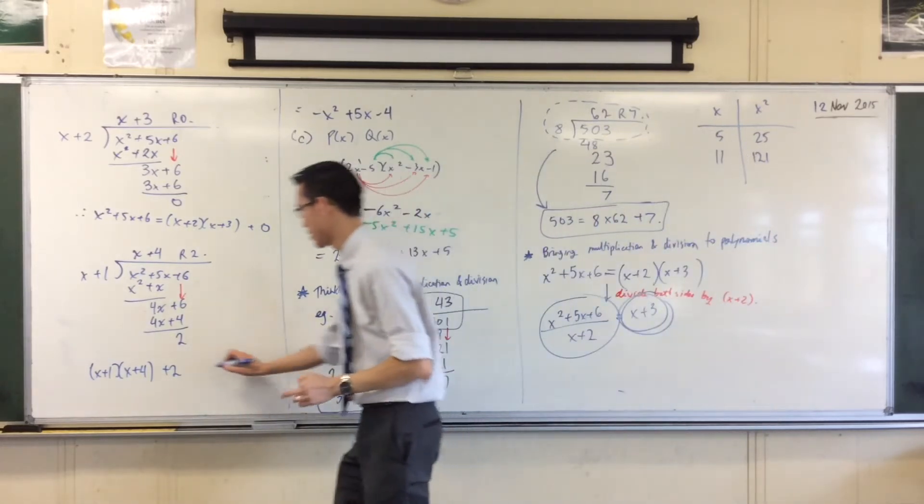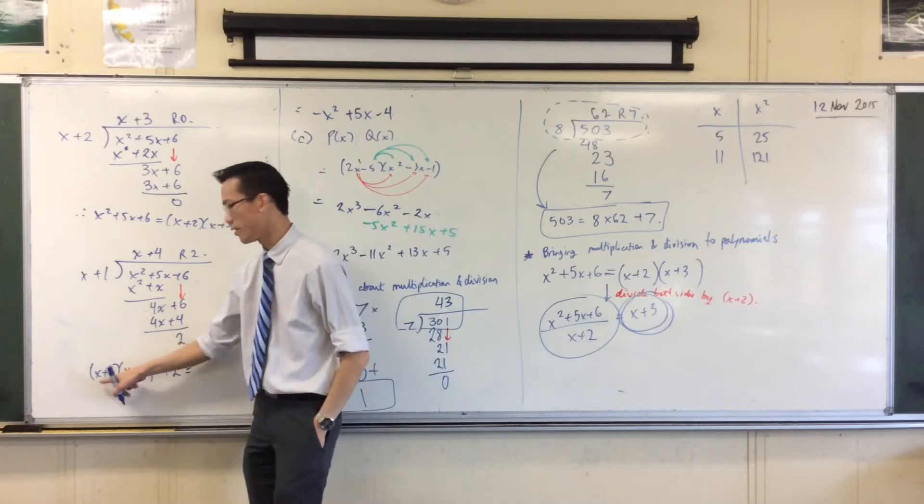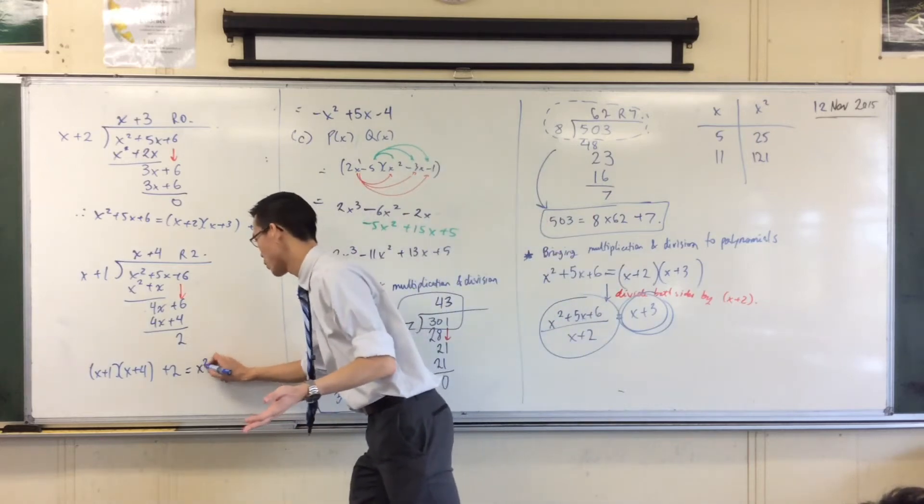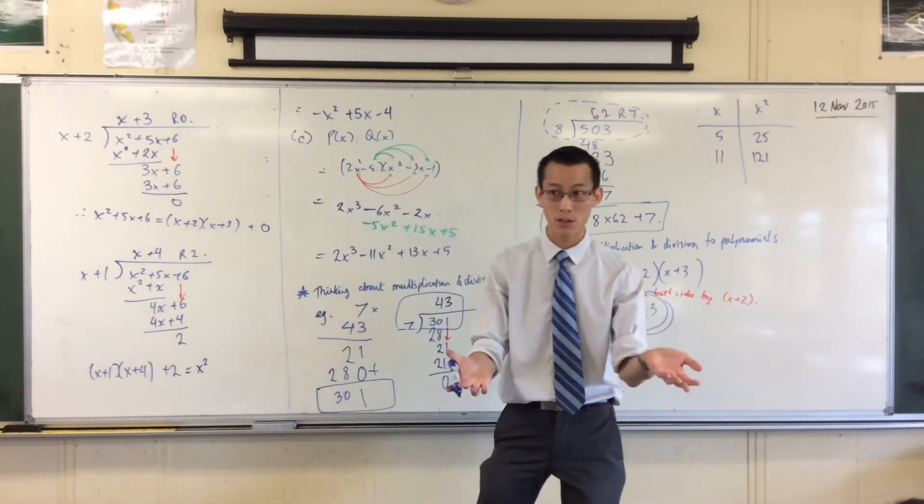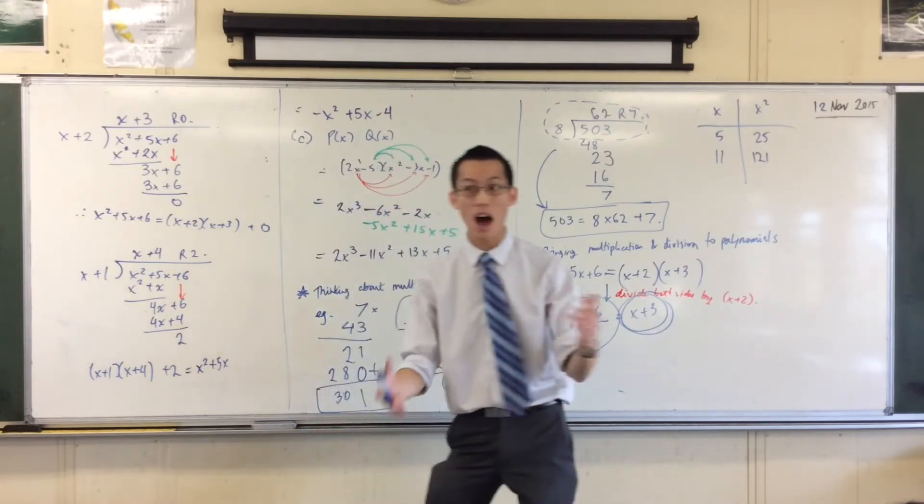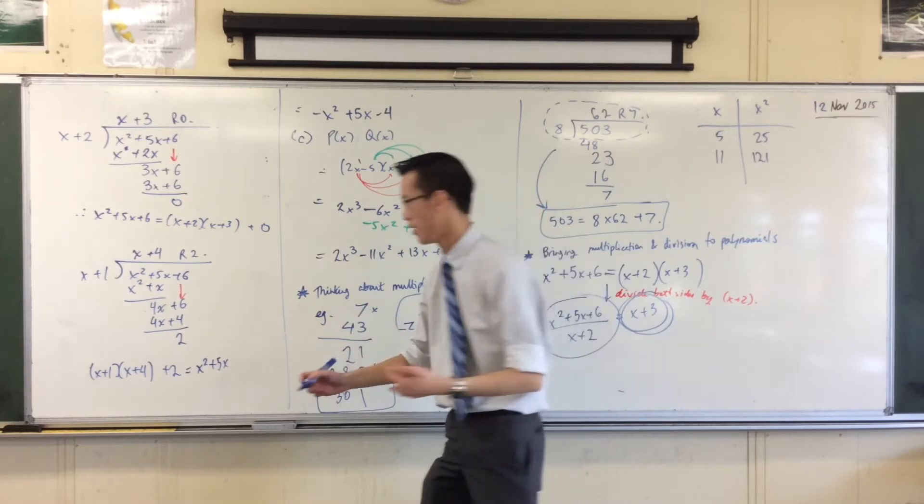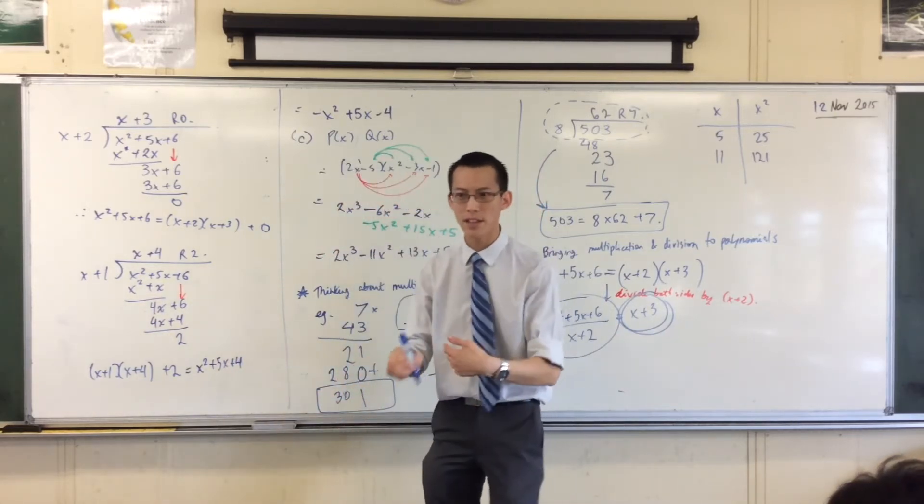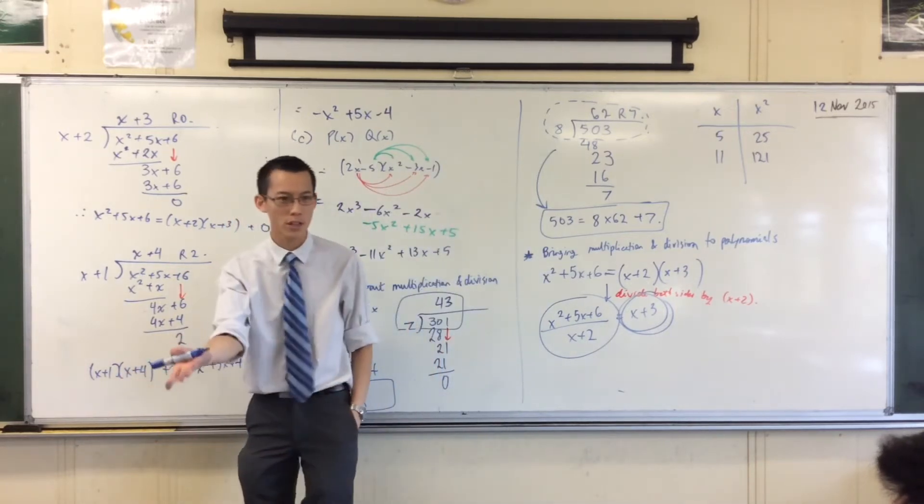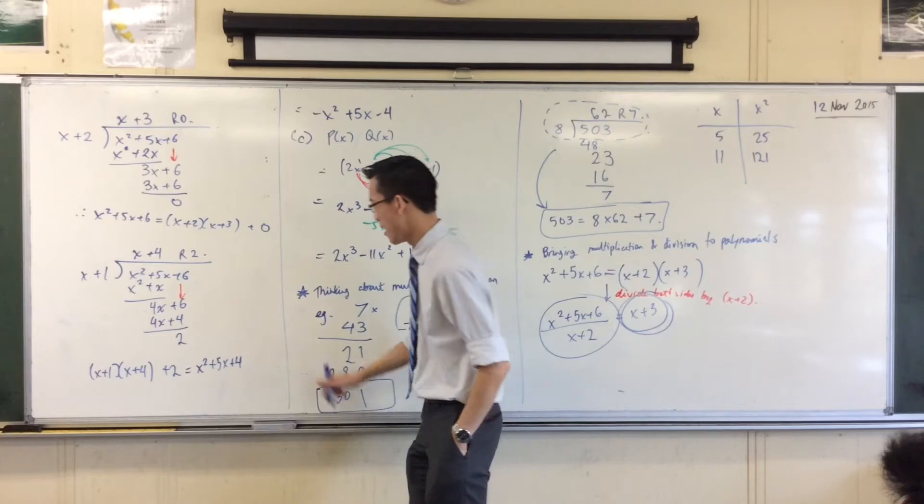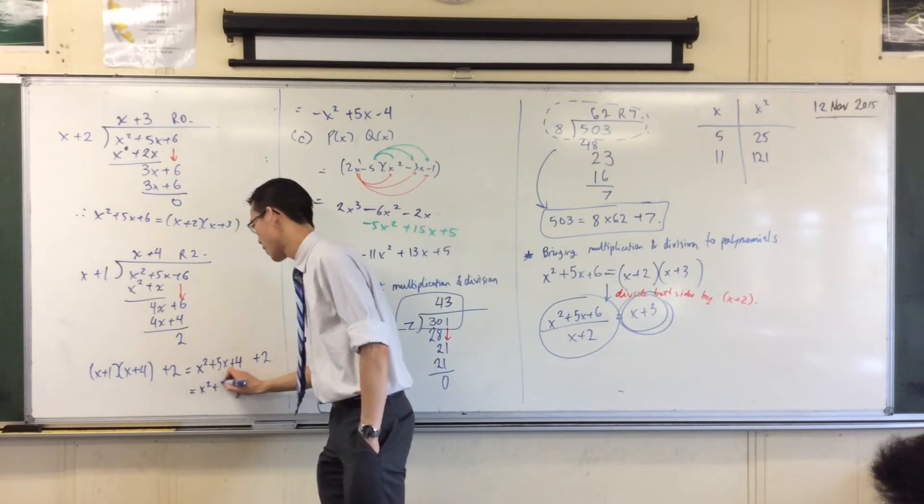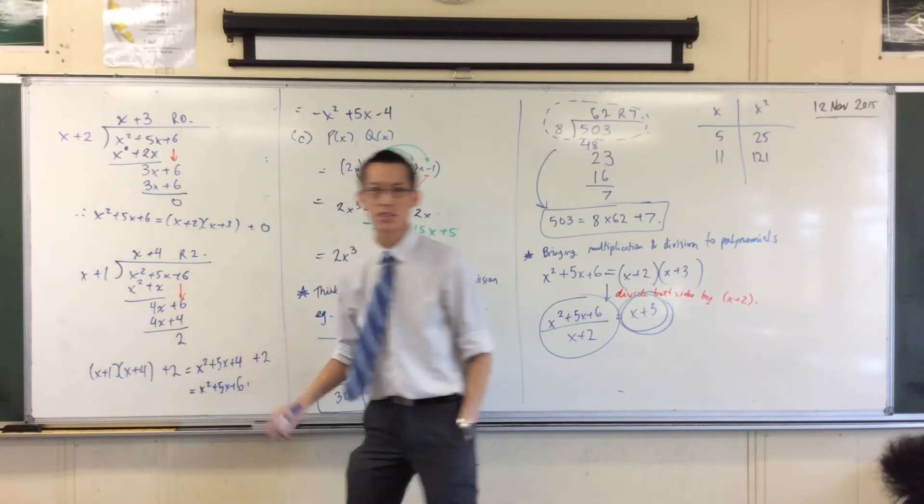I can expand this out. x plus 1, x plus 4. My pair of numbers is 1 and 4. So I know there's an x squared at the front. 1 plus 4 is equal to 5. So that's why I have 5x. And 1 times 4 is equal to 4. So that's why I have 4 there. Do you see that I've done this in reverse? This is factorizing in reverse. Usually you're trying to think of a pair of numbers, but now you know what the pair of numbers is, so you just use them. And then I've got a 2 hanging on the end. Well, hold on. That's x squared plus 5x plus 6, just like we expected.